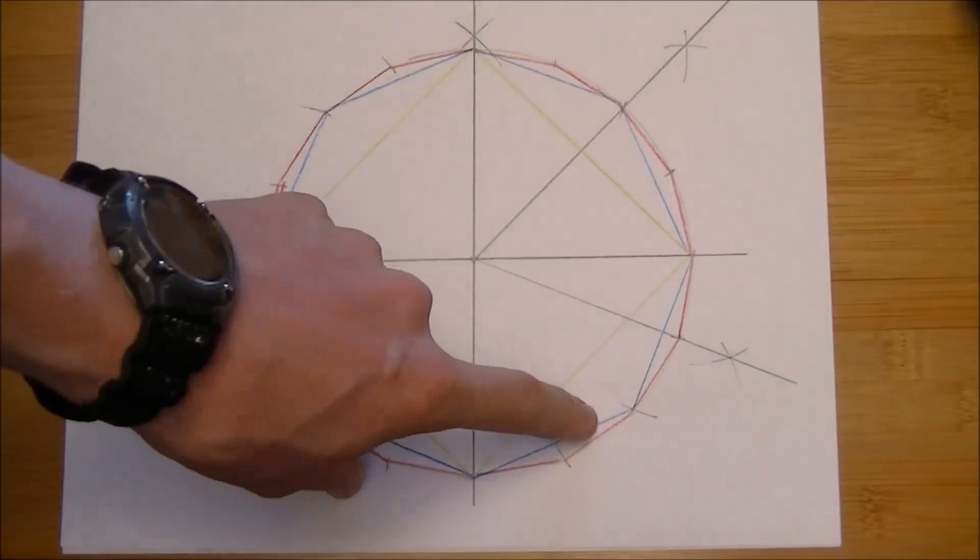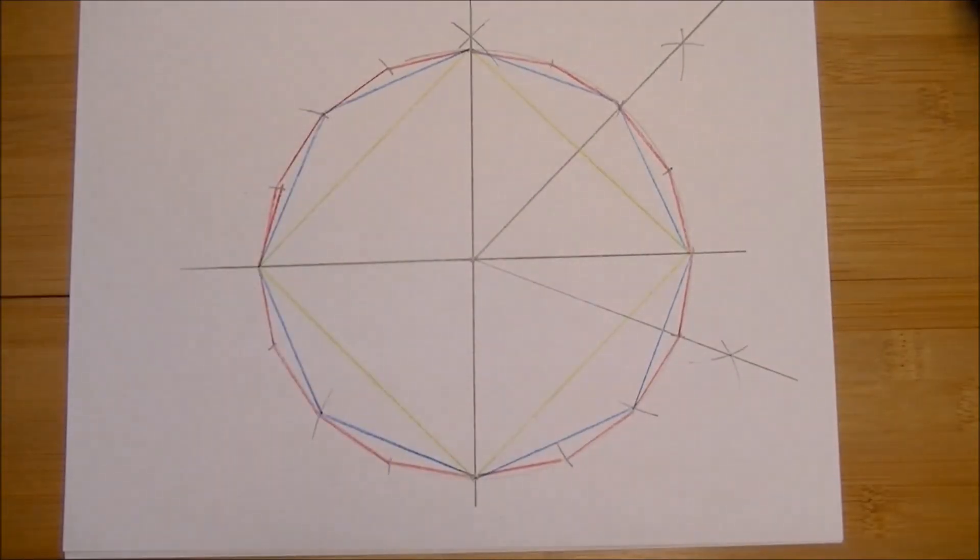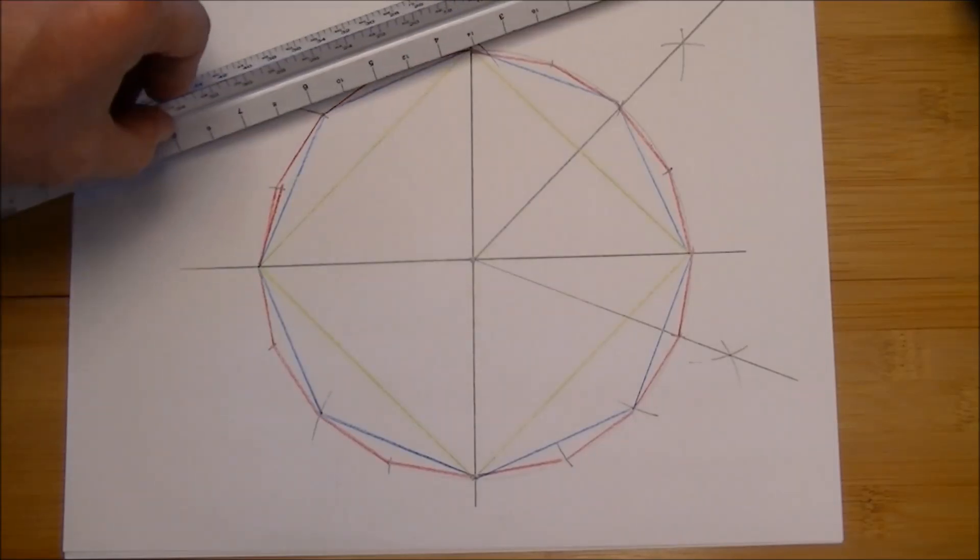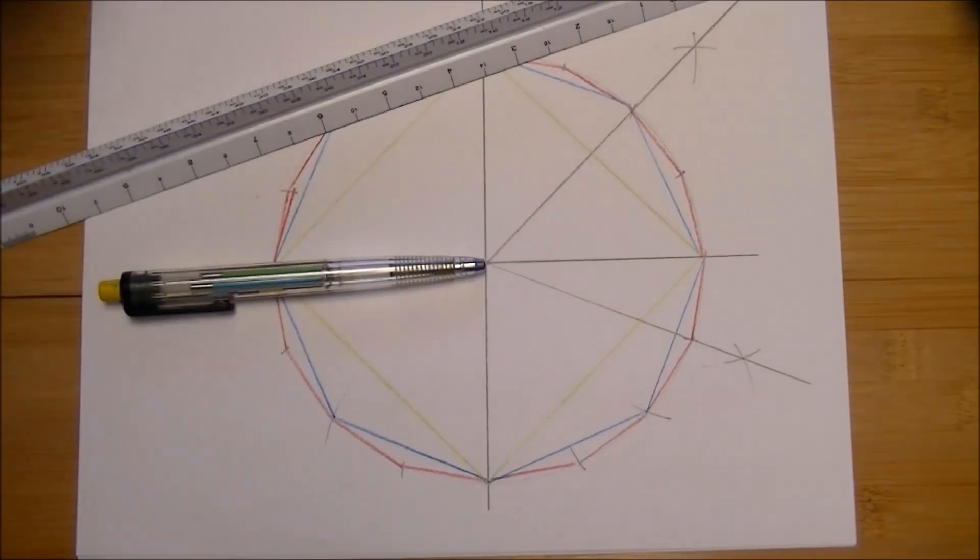The next time, if you divided one of these line segments in half, you'd have a 32-sided polygon. I did that using a straight edge, colored pencil, compass, and regular pencil.